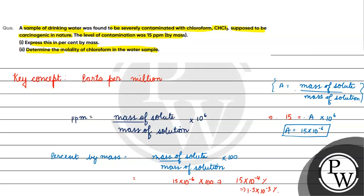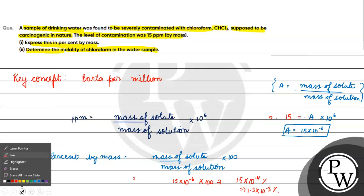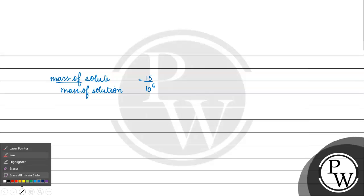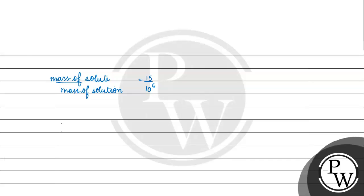Next, we determine the molality of chloroform in the water sample. Mass of solute by mass of solution is 15 by 10 to the power 6. So mass of solution is 10⁶ grams and mass of solute is 15 grams. Mass of solvent equals mass of solution minus mass of solute, which is approximately 10⁶ grams.